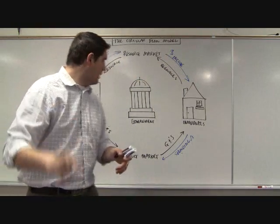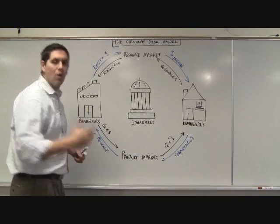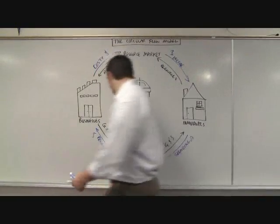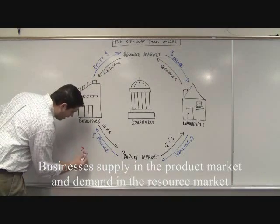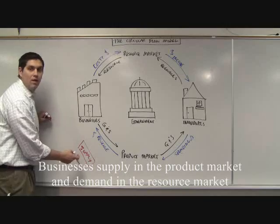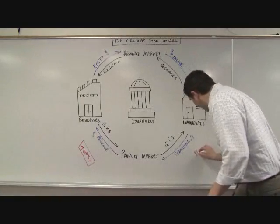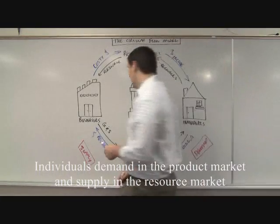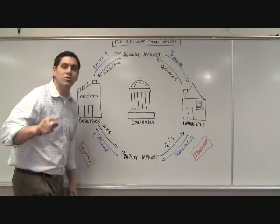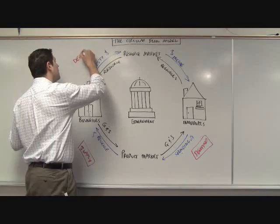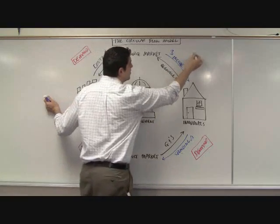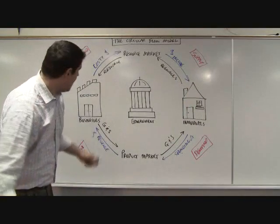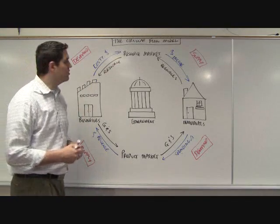Let's analyze the circular flow. Do businesses supply or demand? The answer is both. In the product market, firms are supplying goods and services, and individuals are demanding. But firms are also demanding resources, and individuals supply resources. So the answer is both — businesses supply in the product market and demand in the resource market.